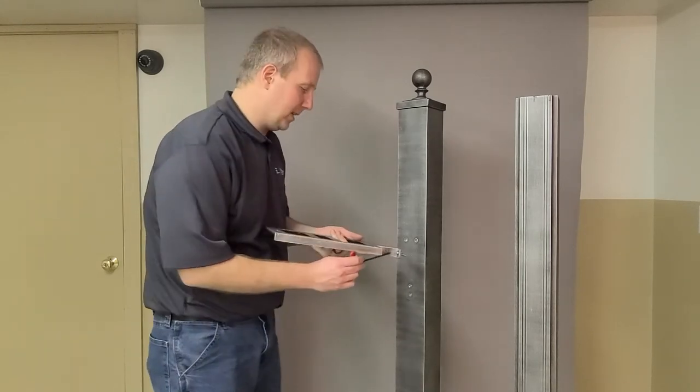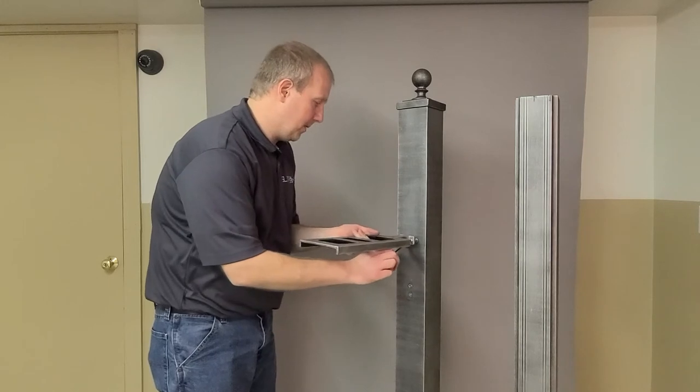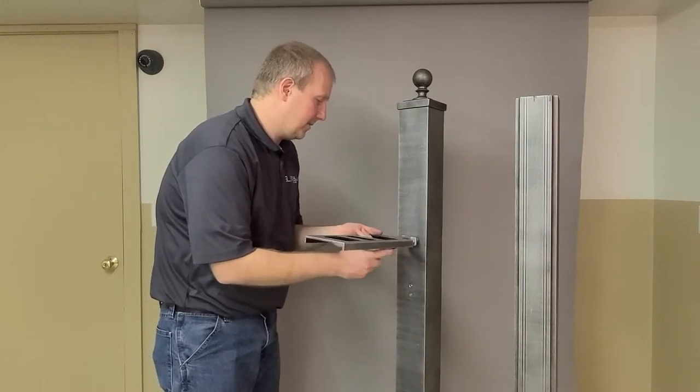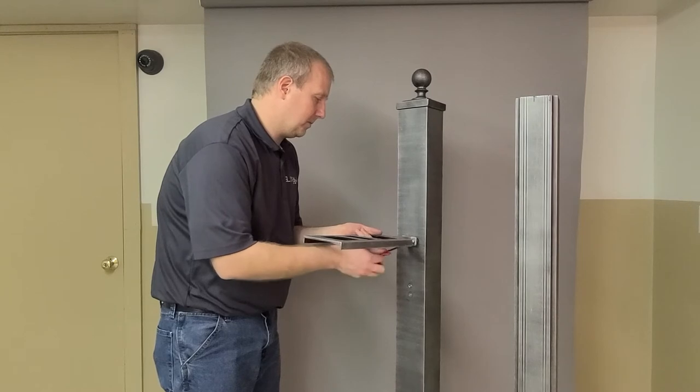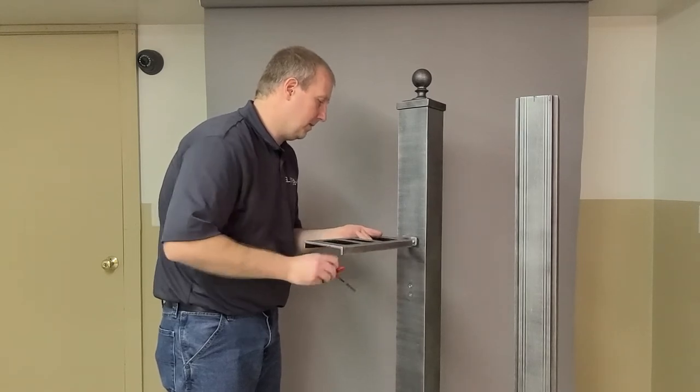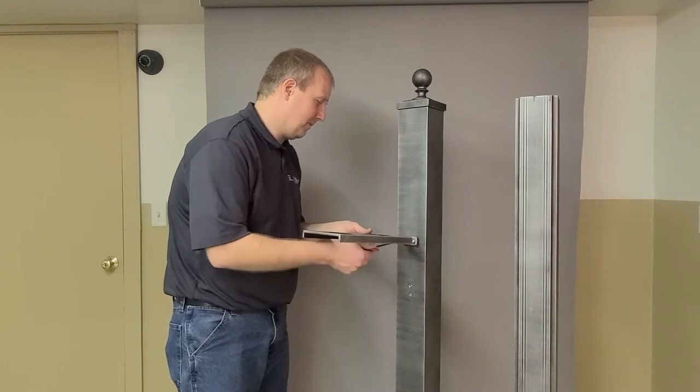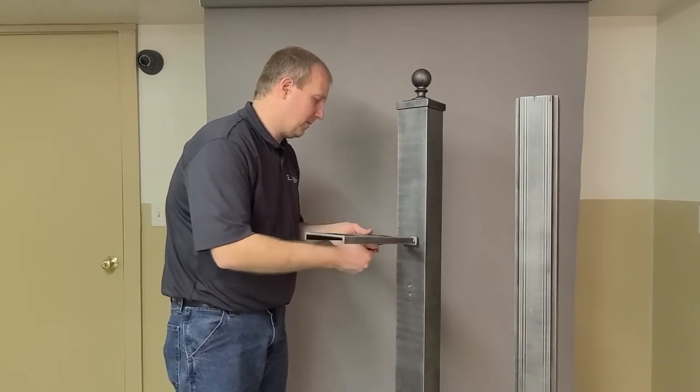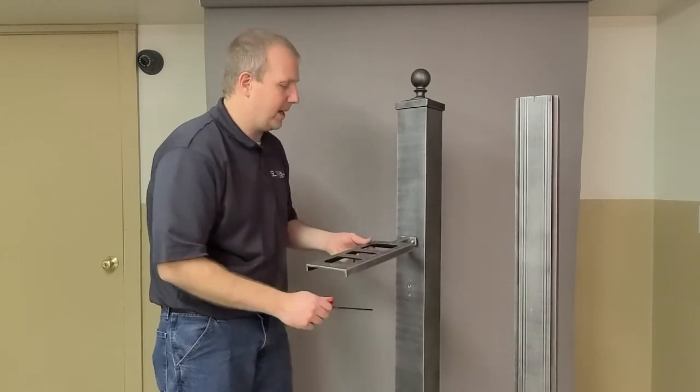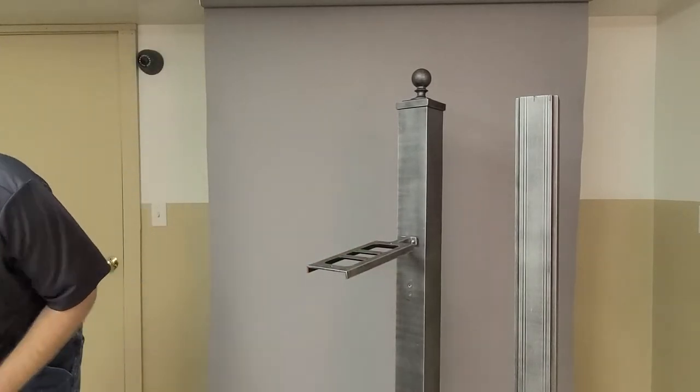And using a large Allen wrench, you're going to line those up and just get them started about halfway. Now as you have it about halfway, just let it sit down for a second and grab the scroll.